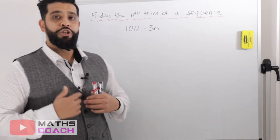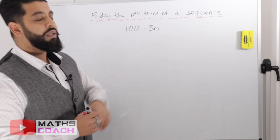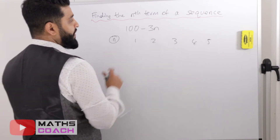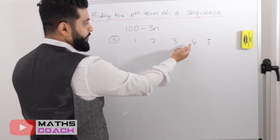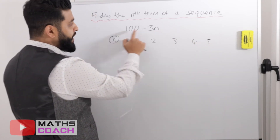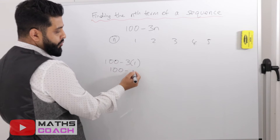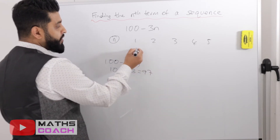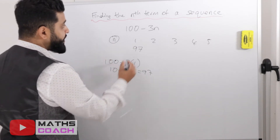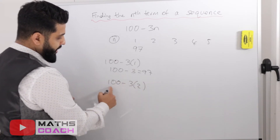For our final generating example, the rule is 100 minus 3n. We generate the first five terms with n = 1, 2, 3, 4, 5. For n equals 1: 3 times 1 is 3, and 100 take away 3 gives us 97. For n equals 2: 3 times 2 is 6, and 100 take away 6 gives us 94.